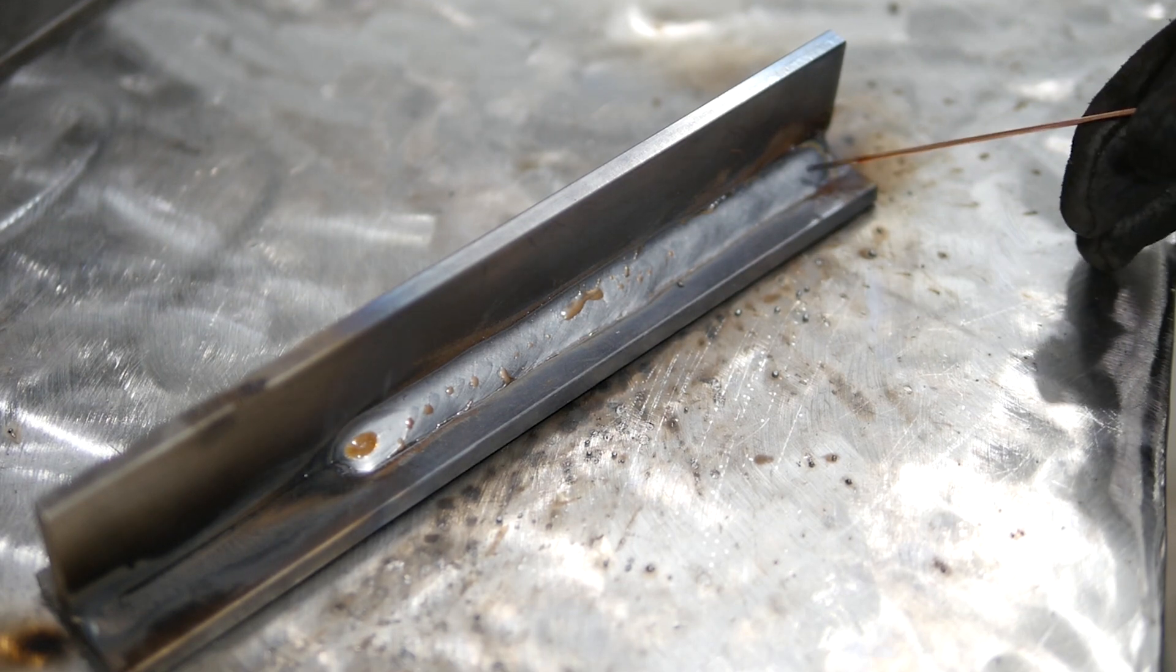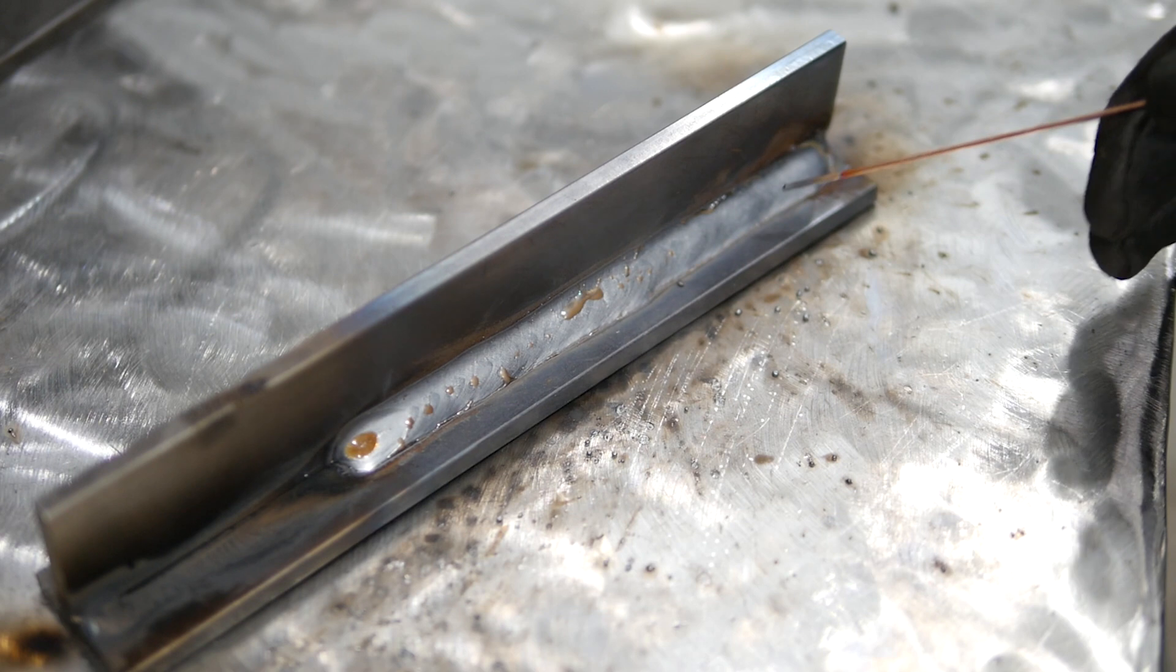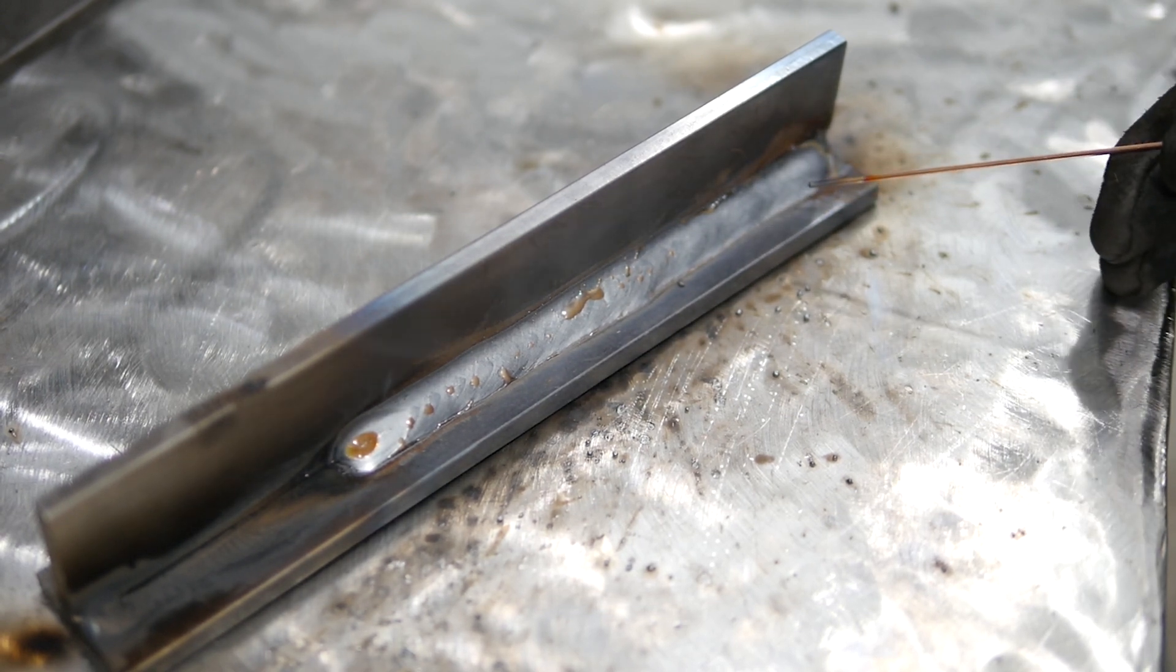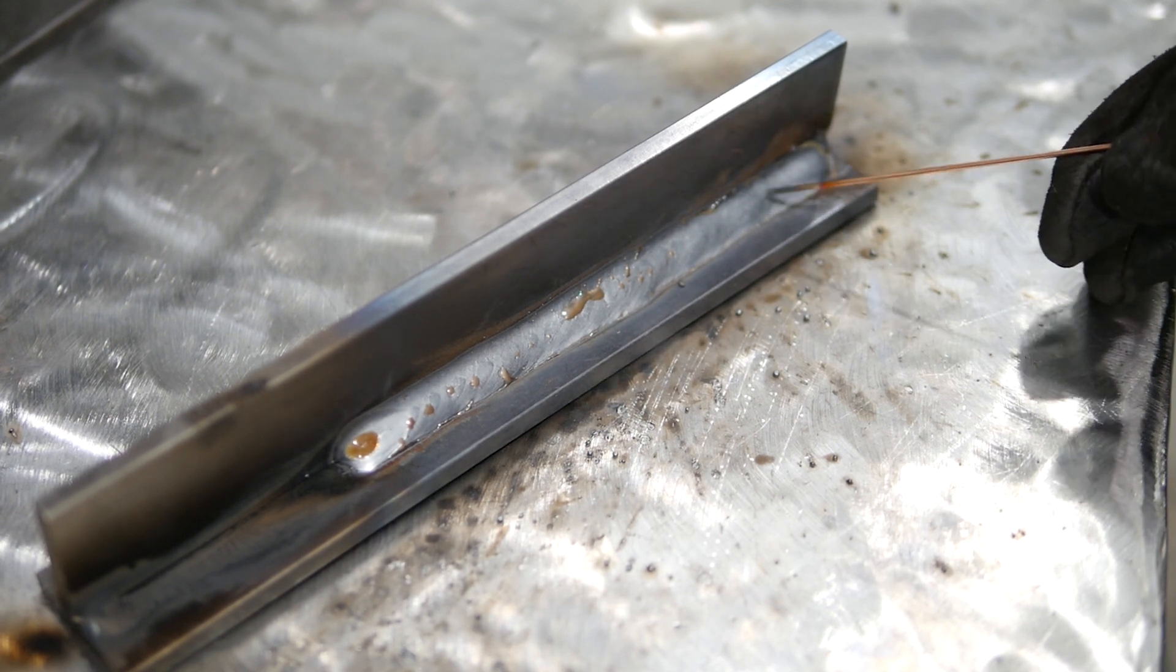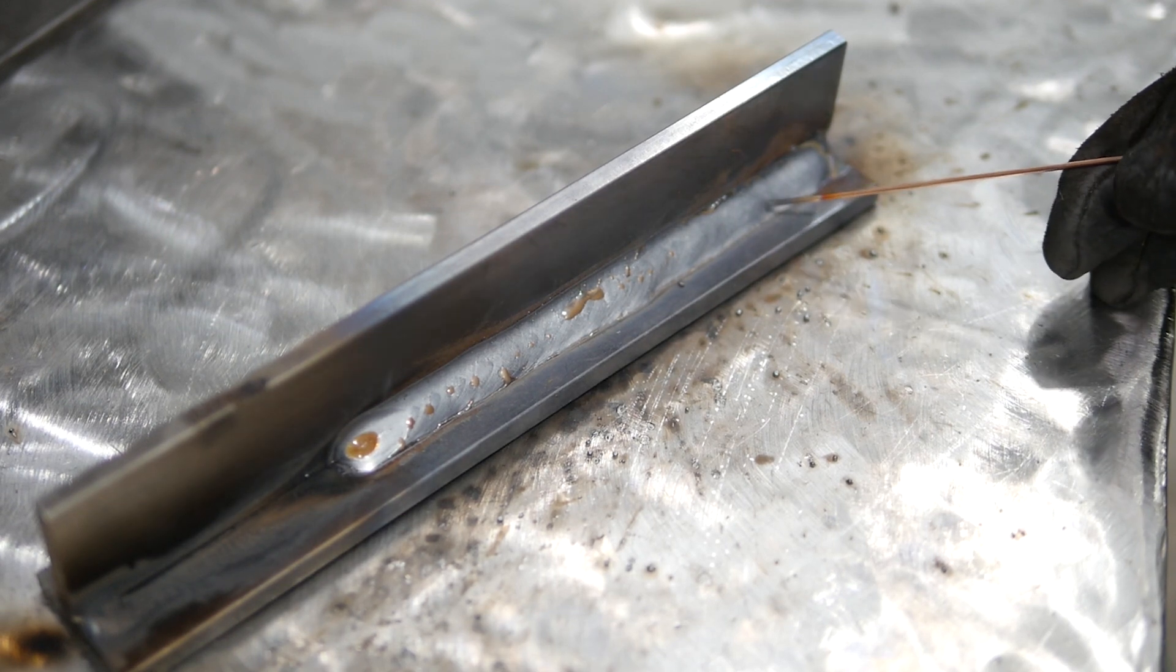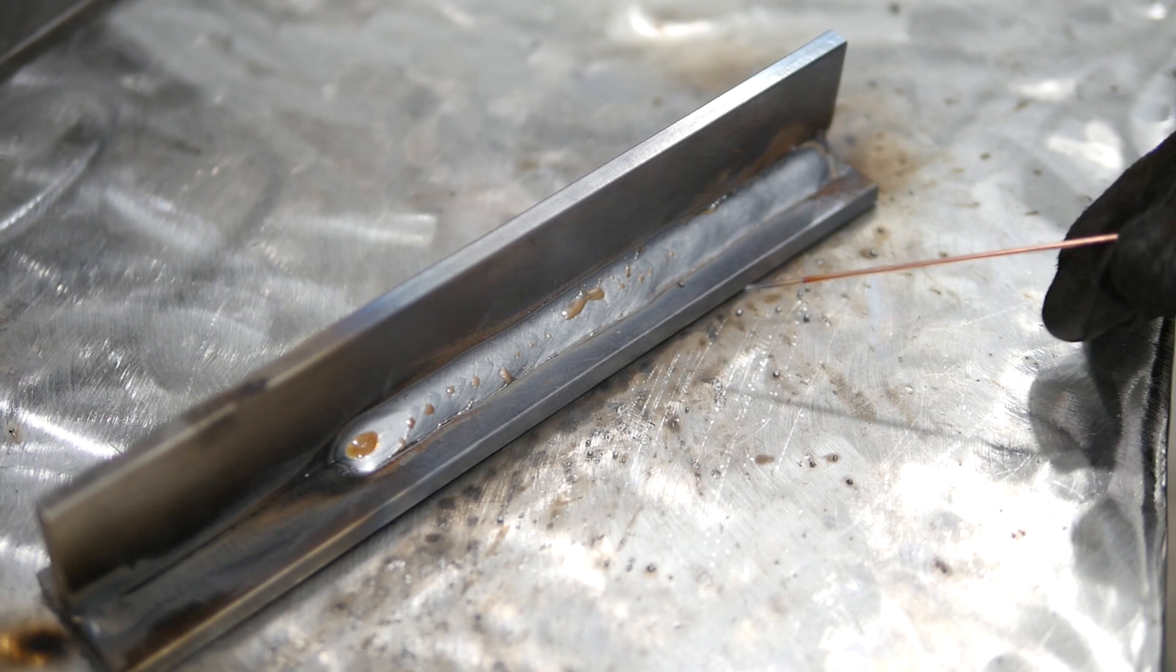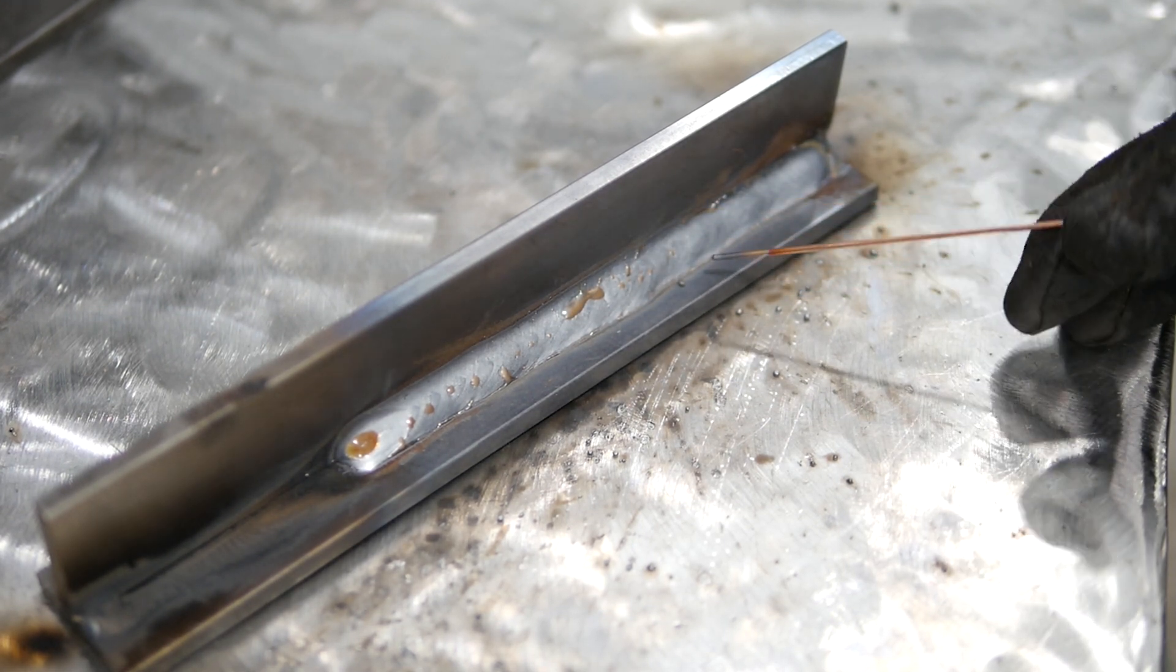Now this process, we really want to make sure that we have our gas at at least an 85/15 argon carbon dioxide, really a 90/10 is the best type of gas for this, but it gets way more penetration than the short circuit and the globular transfer. So we'll cut this one down the middle and put some acid to etch the sides and we'll see how much penetration we got into our quarter inch base material.